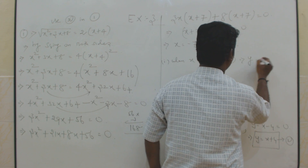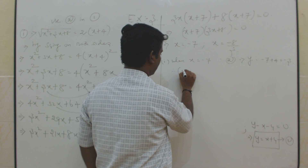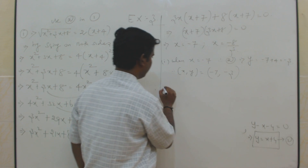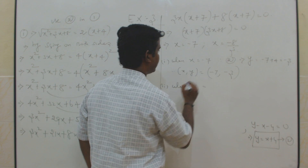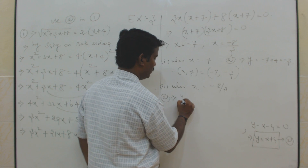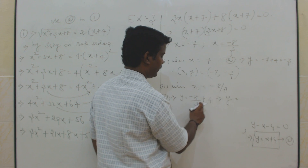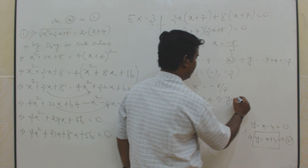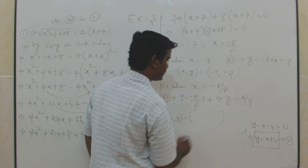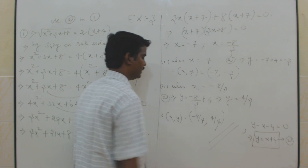Using equation 2 to find y: when x equals minus 7, y equals minus 7 plus 4 equals minus 3. So one set of values is x equals minus 7, y equals minus 3. For the second case, when x equals minus 8 by 3, y equals minus 8 by 3 plus 4 equals (minus 8 plus 12) by 3 equals 4 by 3. So the other set of values is x equals minus 8 by 3, y equals 4 by 3. This is the final answer.